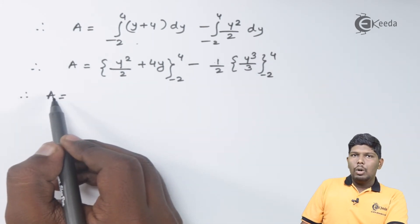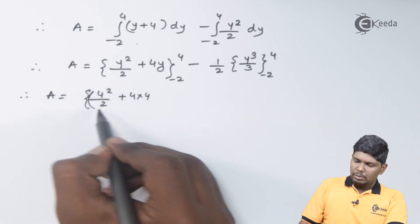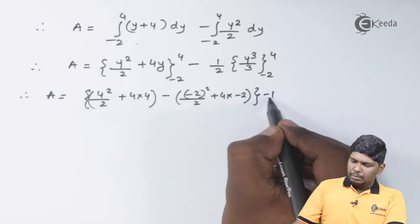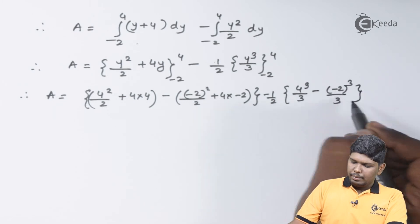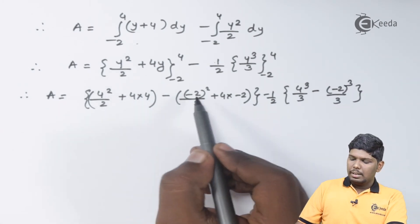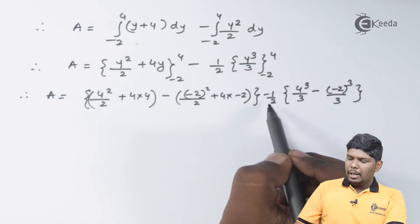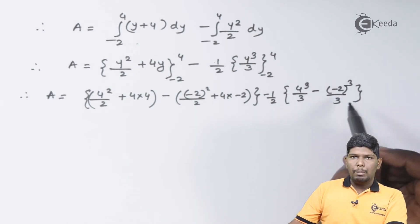On substituting upper and lower limits, we have 4²/2 + 4(4) - (-2)²/2 - 4(-2) - (1/2)[4³/3 - (-2)³/3].